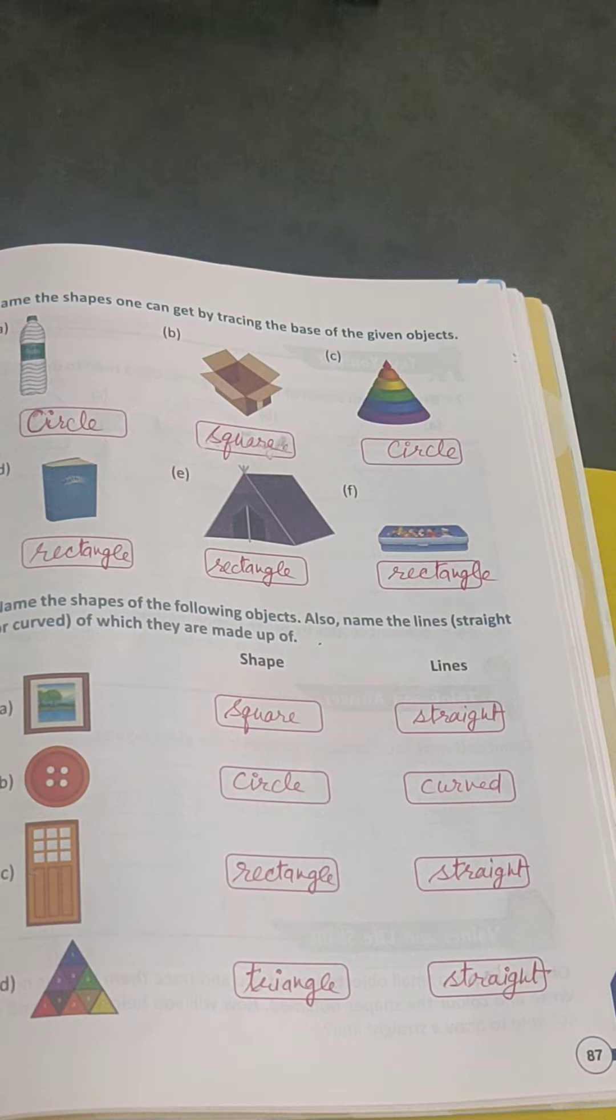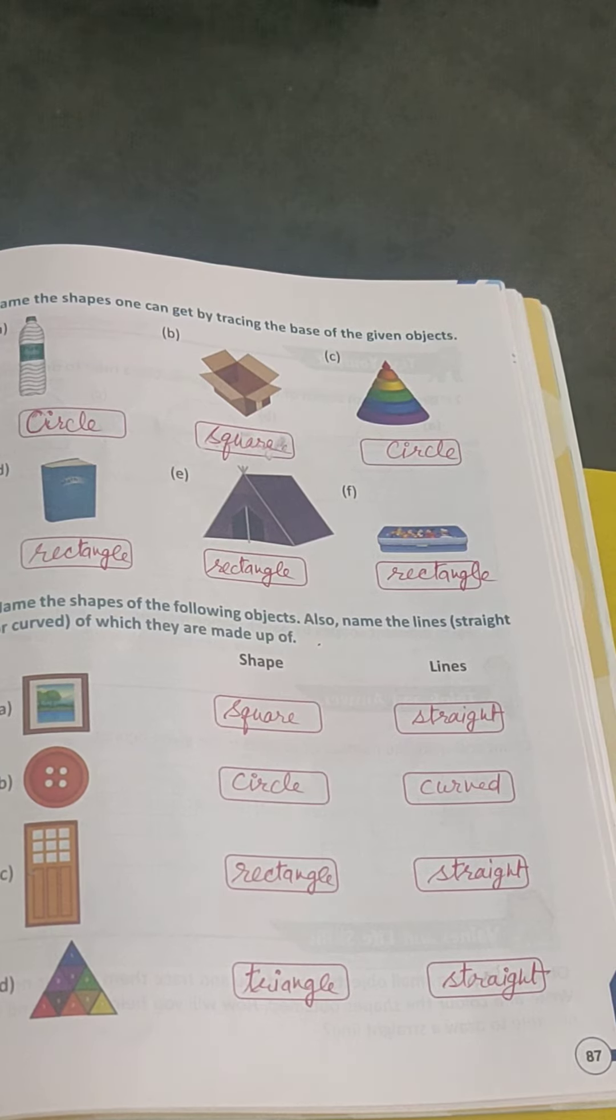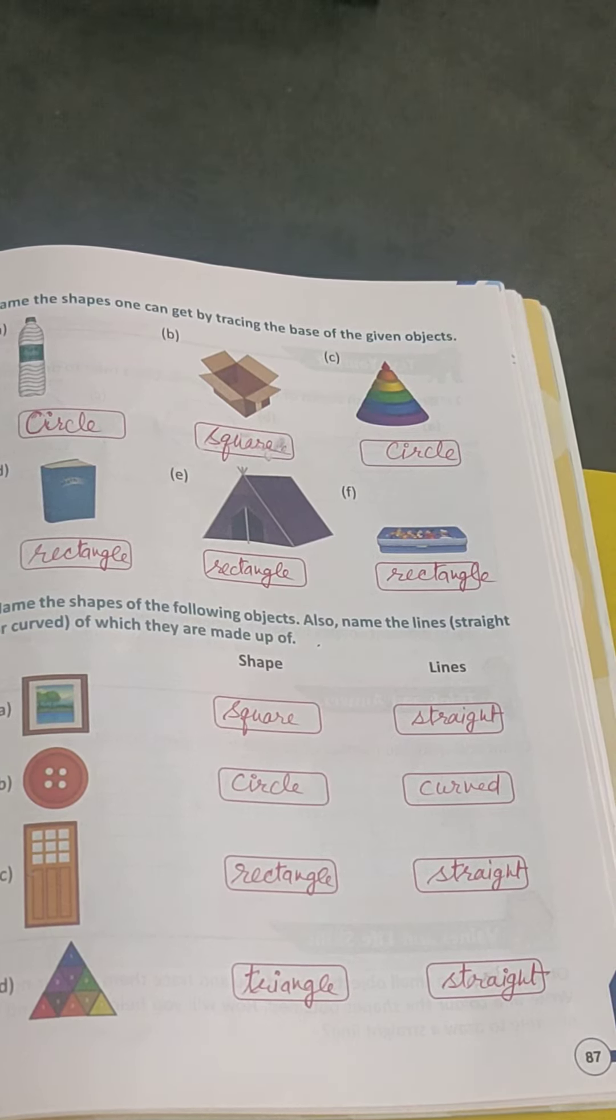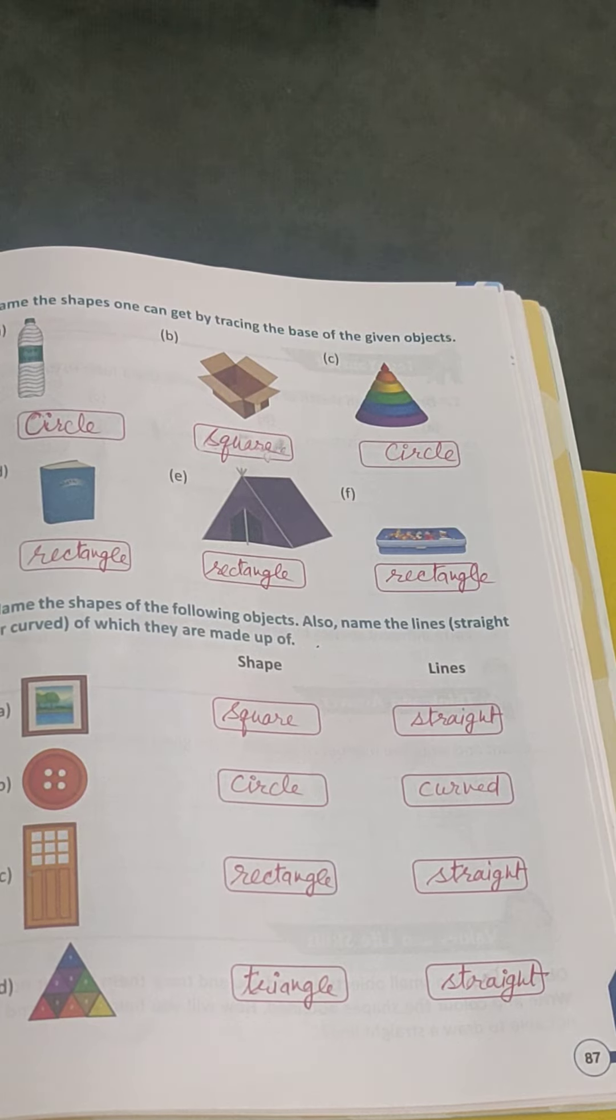Object E is a tank. Square. Object F is a lunch box. Rectangle.